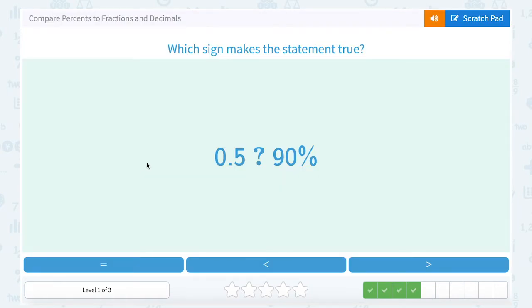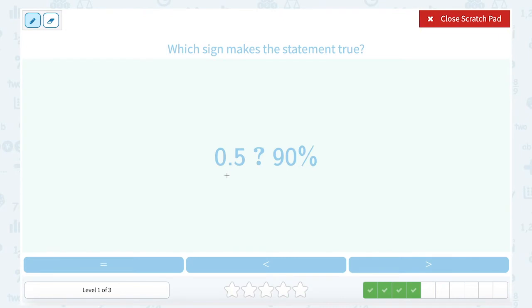0.5, how does that compare to 90%? Well, think about what 0.5 would be, and you want to either make them both decimals, or both fractions, or both percents, so we can compare. So let's make these both decimals.